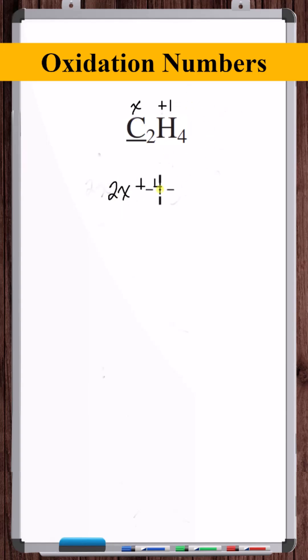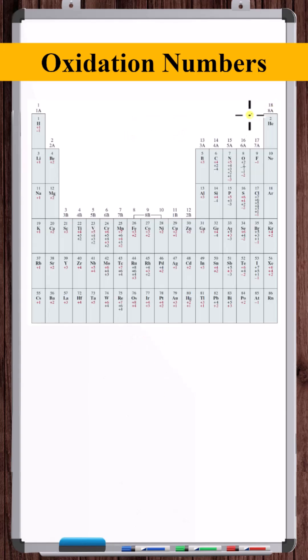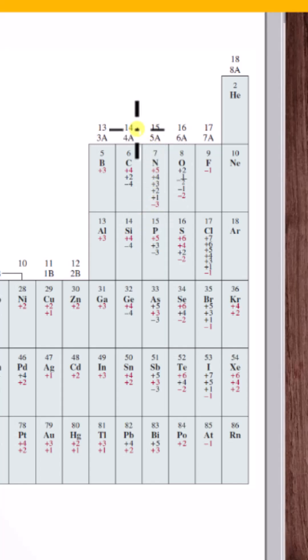There are 2 carbon atoms and 4 hydrogen atoms. Solving for x, we get minus 2. Checking the oxidation number chart for carbon, we don't see an oxidation number of minus 2.